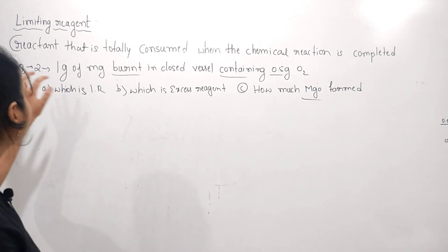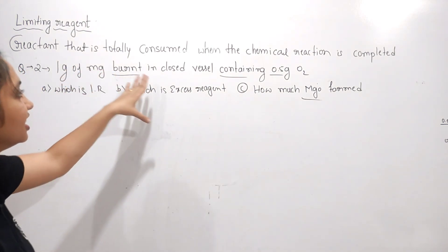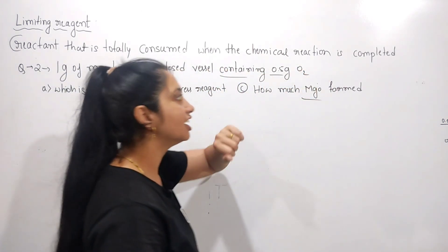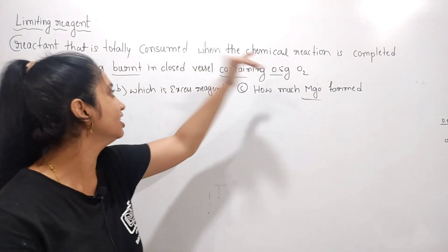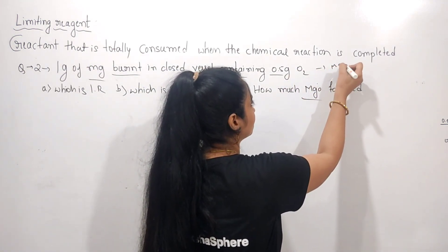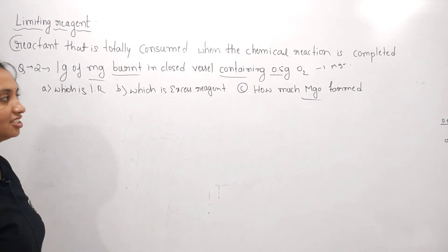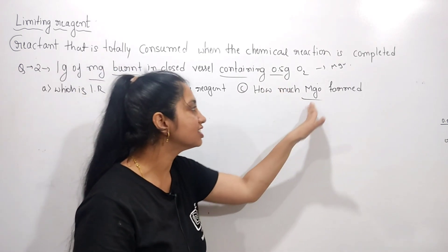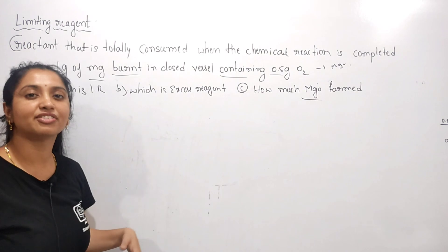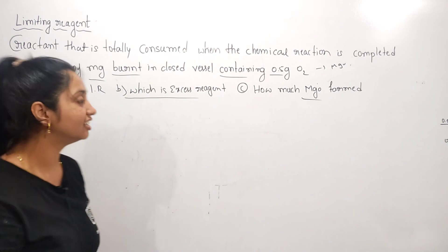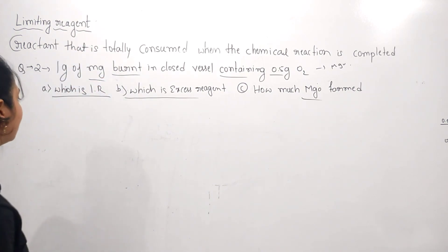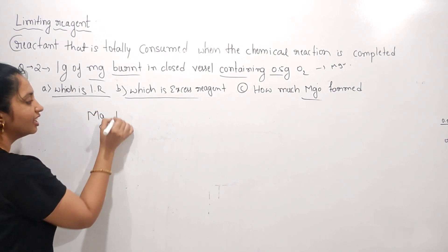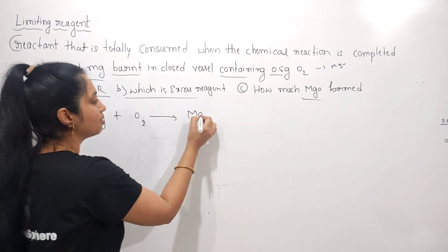The next problem: 1 gram of magnesium is burnt in a closed vessel containing 0.5 gram of oxygen. Magnesium undergoes combustion — Mg reacts with oxygen to give MgO. The questions ask: which is the limiting reagent, which is the excess reagent, and how much MgO is formed? This problem is from a previous NEET question paper. First step: write the balanced chemical equation — 2Mg + O₂ → 2MgO.